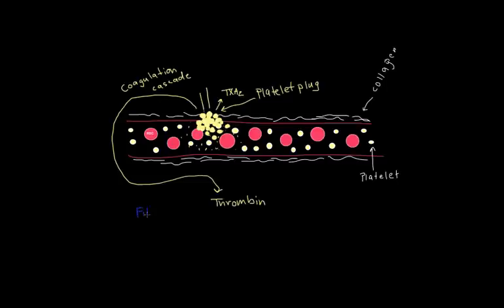Fibrin starts being formed in the blood. Let me draw some fibrin being made in the blood here. It's like rebar in cement. What it does in the area of this platelet plug is reinforce it, and what we get is a stable fibrin clot.